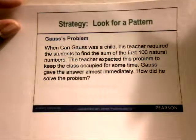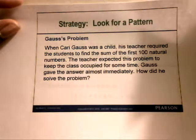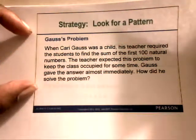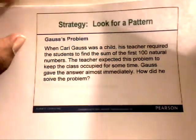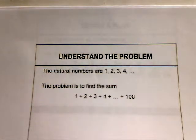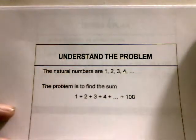Let's take this example. When Carl Gauss, who is a mathematician, was a child, his teacher required students to find the sum of the first 100 natural numbers. The teacher expected this problem to keep the class occupied for some time. But Gauss gave the answer almost immediately. Going through Polya's four-step process: first, we understand the problem. The natural numbers are 1, 2, 3, 4, and so on. The problem is to find the sum of 1 plus 2 plus 3 plus 4 and so on up to 100.